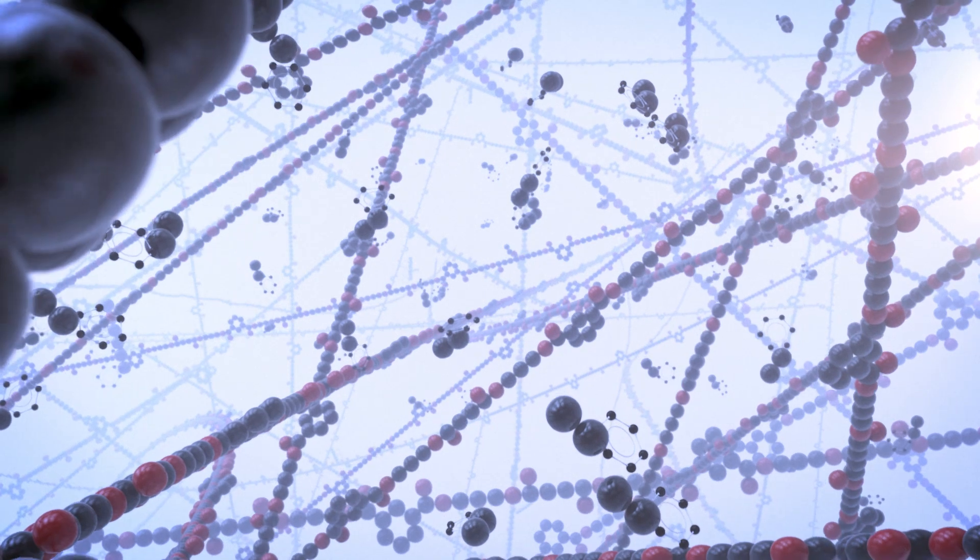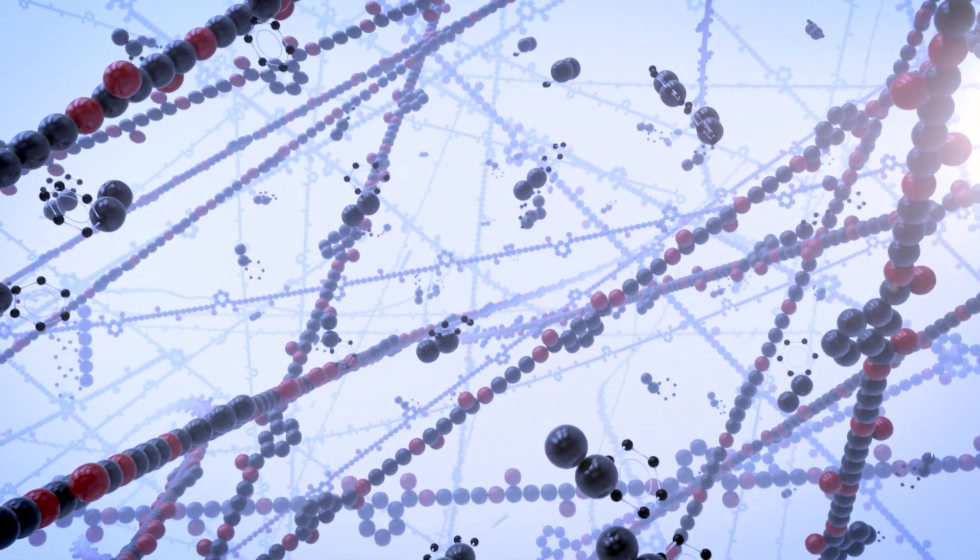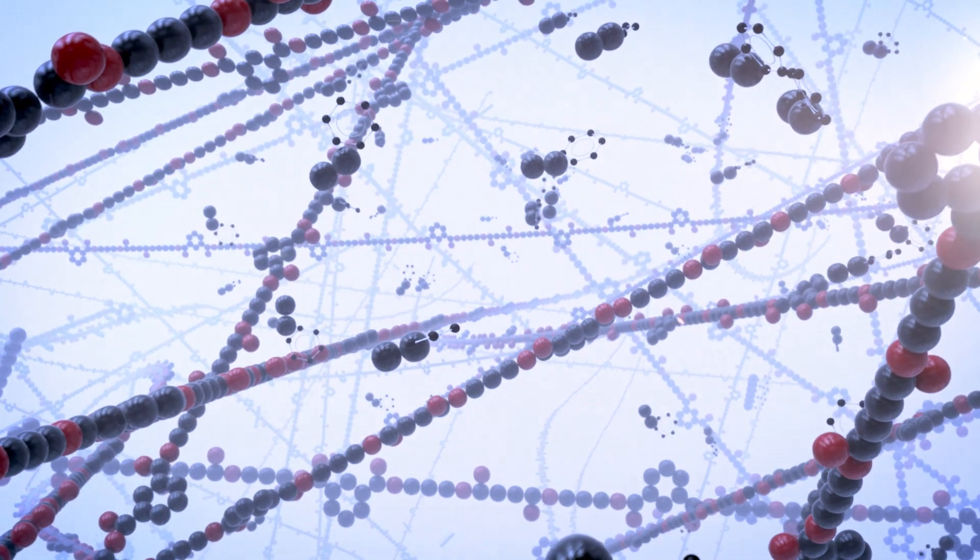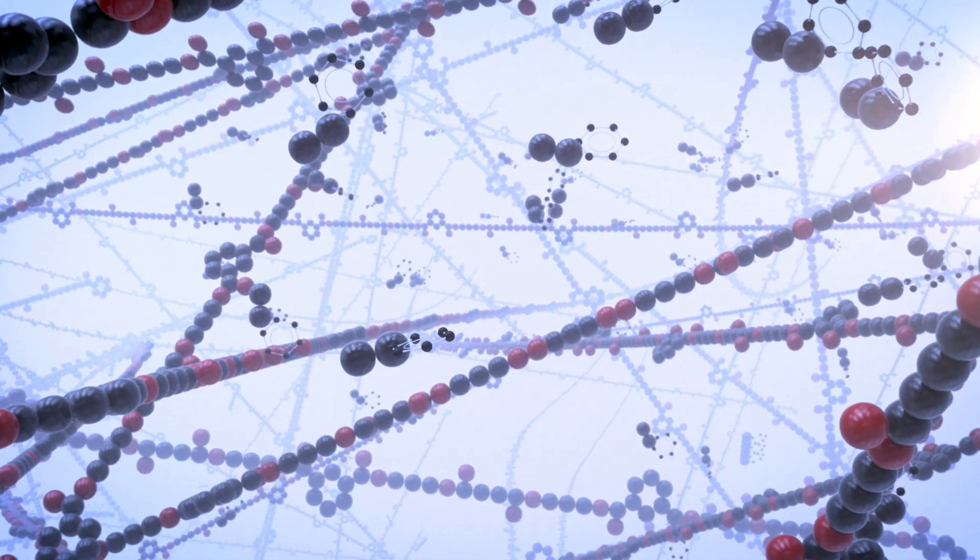Polyester resin consists of long polyester chains, which are dissolved in a solvent such as styrene. Here the chains can move freely and slide past each other. Let's zoom in a bit further.